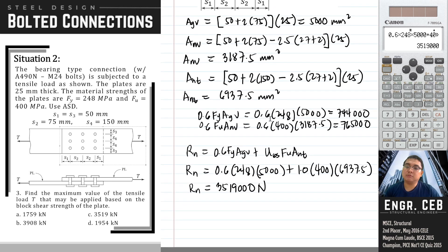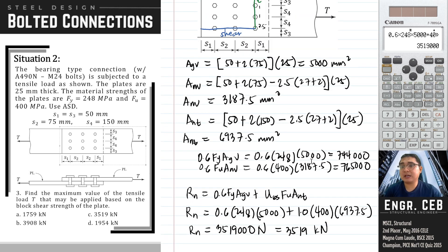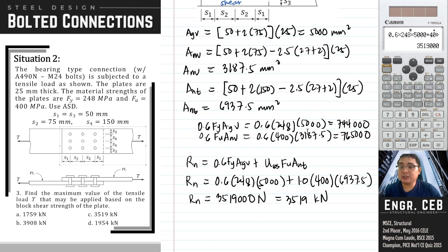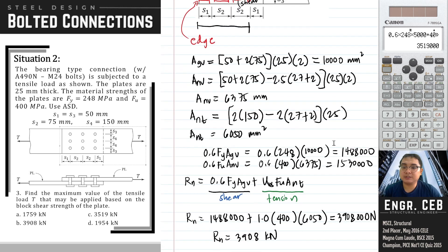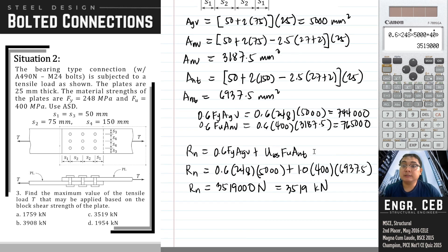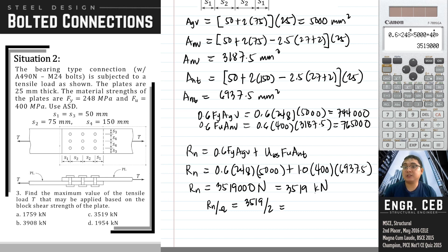We now have the nominal block shear strengths for both cases: case 1 is 3,908 kN and case 2 is 3,519 kN. The governing block shear strength is the lesser of the two, which is 3,519 kN. Dividing by the factor of safety of 2, the allowable capacity is 1,759.5 kN.